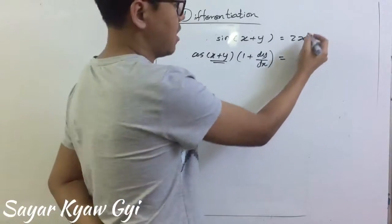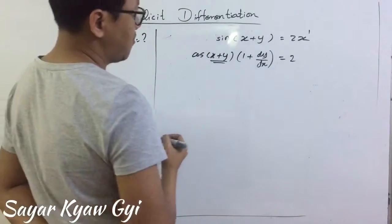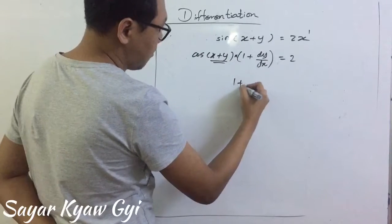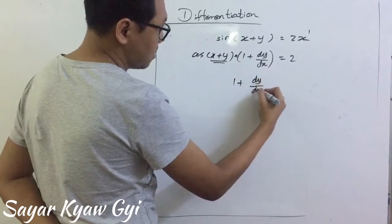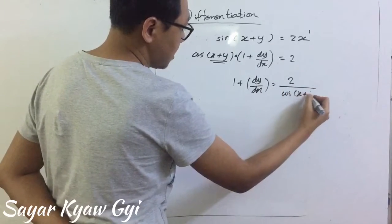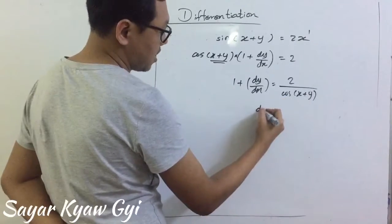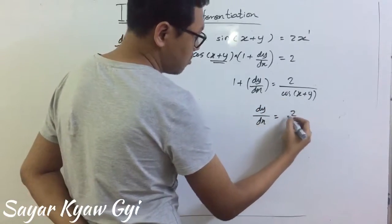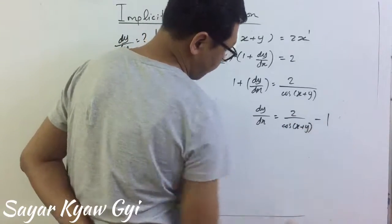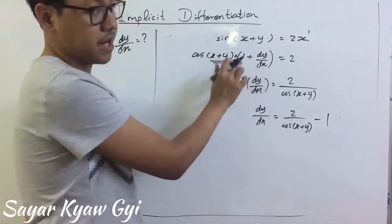When we differentiate 2x, we get 2. The next step is this one times, so we're going to divide: 1 plus dy by dx equal to 2 over cosine of (x plus y). And then 1 will be subtracted away. dy by dx equal to 2 over cosine of (x plus y) minus 1. This is how we do it with the trigonometry function — I use the chain rule here.